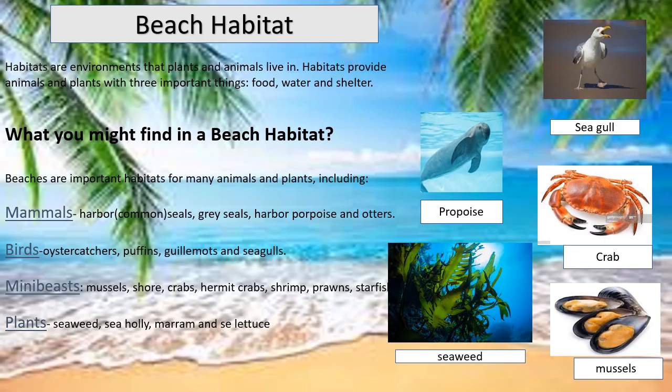In this slide you can see examples: mammals are seals, gray seals, harbor porpoise and otters. Birds include oyster catchers, puffins, guillemots and seagulls. Mini beasts include mussels, shore crabs, hermit crabs, shrimp, prawns and starfish. Plants include seaweed, sea holly, marram and sea lettuce.